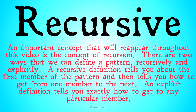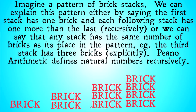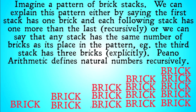So imagine a pattern of brick stacks. We can explain this pattern either by saying the first stack has one brick, and each following stack has one more than the last — recursively. Or we can say that any stack has the same number of bricks as its place in the pattern; for example, the third stack has three bricks — defining it explicitly. It's important to note that you can find out how many bricks are in the fourth stack either way: by using the recursive definition, noting the first has one, the second has two, the third has three, and the fourth has four; or explicitly, since it's fourth in line, there are four bricks.